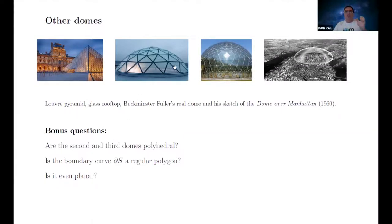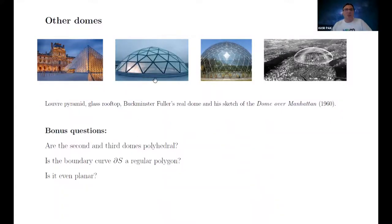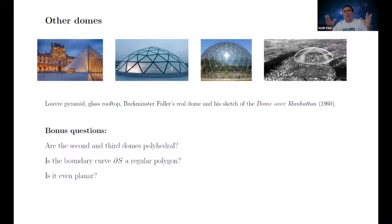Here's a question: is that middle picture an actual dome over a regular 20-gon, or whatever it is? Can you actually make a dome like that — a dome over a regular 20-gon that looks like that? In fact, there is no dome like that with that combinatorics over a 20-gon, because we actually know the classification of all Johnson bodies, and this is not one of them.